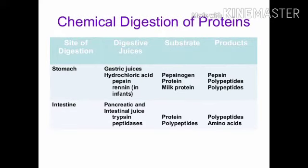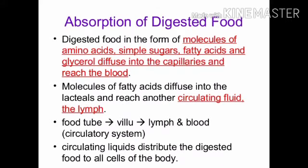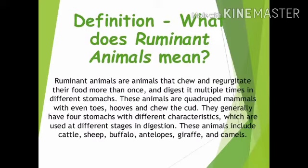The stomach secretes gastric juice which contains hydrochloric acid, helping in digestion of protein; and intestinal juice which helps in digestion of proteins and polypeptides. Fat cannot be digested in the body as such; therefore, it is converted into tiny fat droplets through the process of emulsification. Absorption of digested food — amino acids, simple sugars, fatty acids, and glycerol — diffuse into the capillaries, reach the blood, and circulating fluids distribute this digested food to all cells of the body.